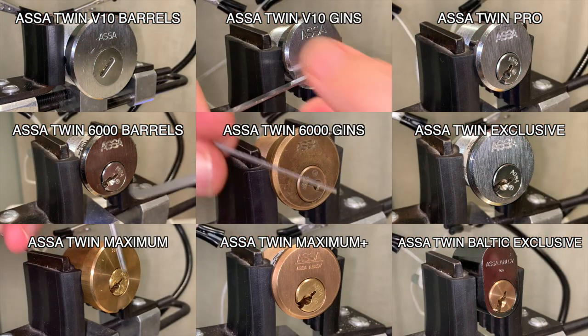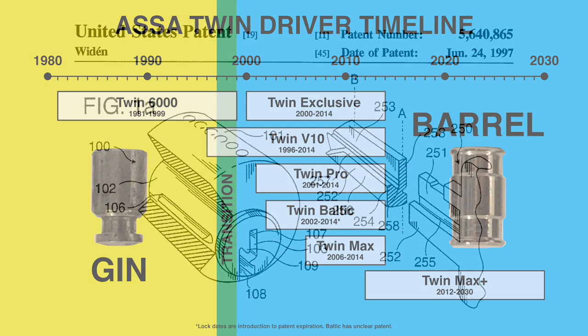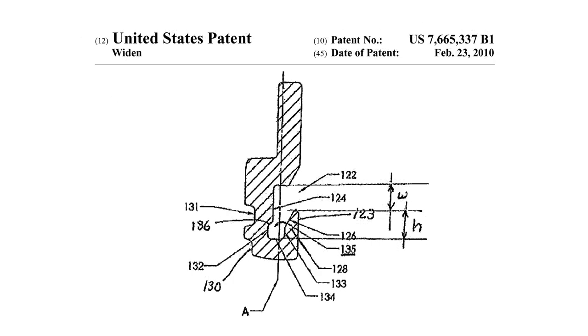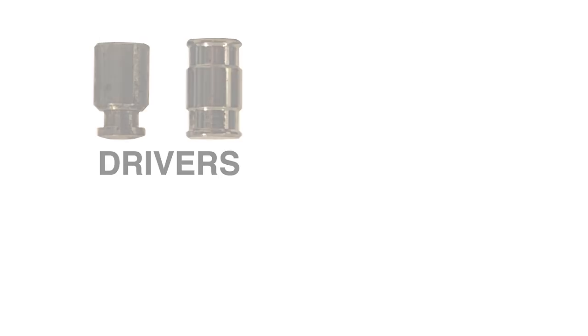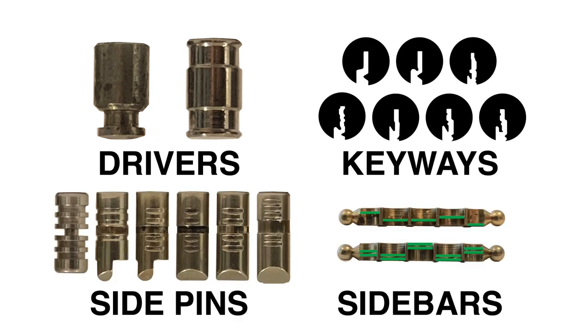All 9 of these videos are going to be linked in the description below. In the next video of this series, we will explore the timeline, patents, and differences in these locks, which can be separated into 4 categories: driver pins, keyways, sliders, and sidebar design.